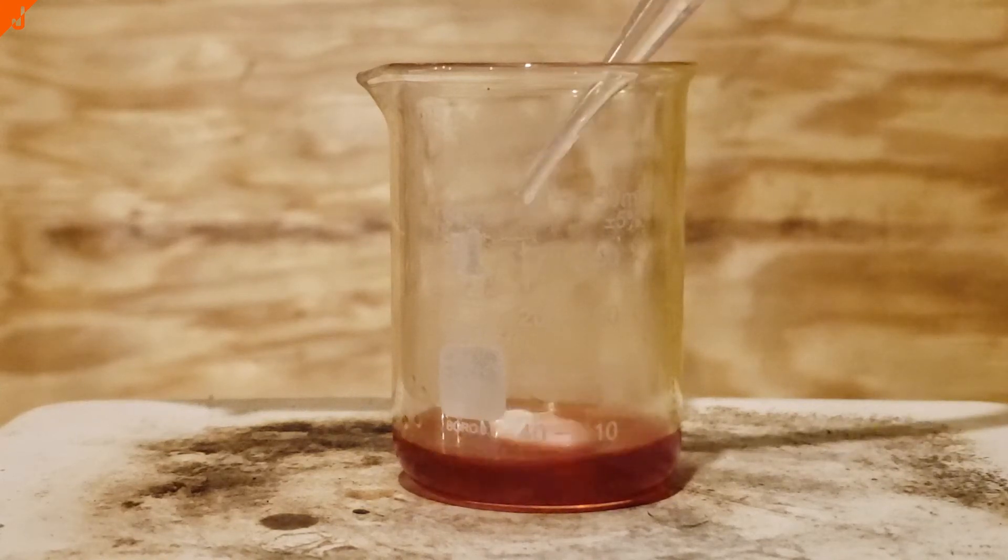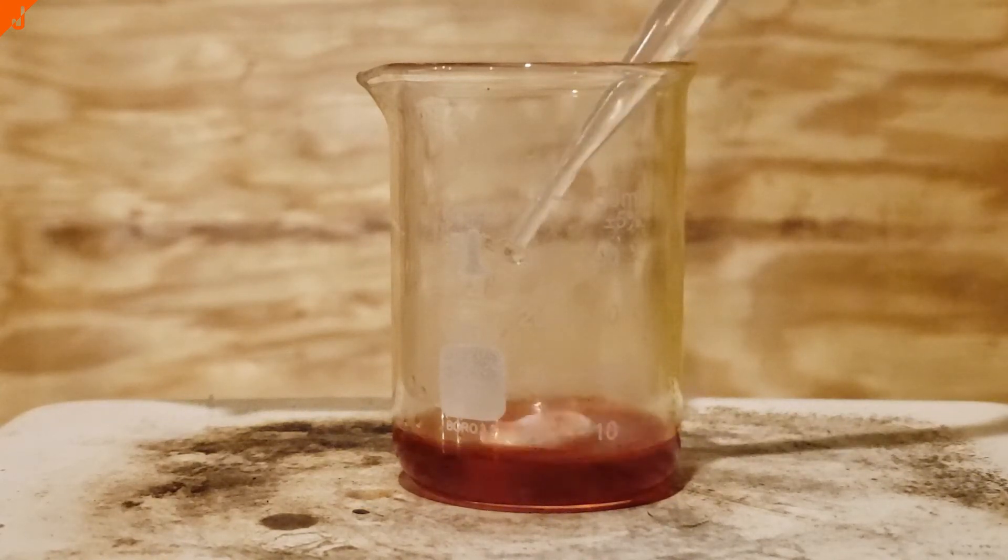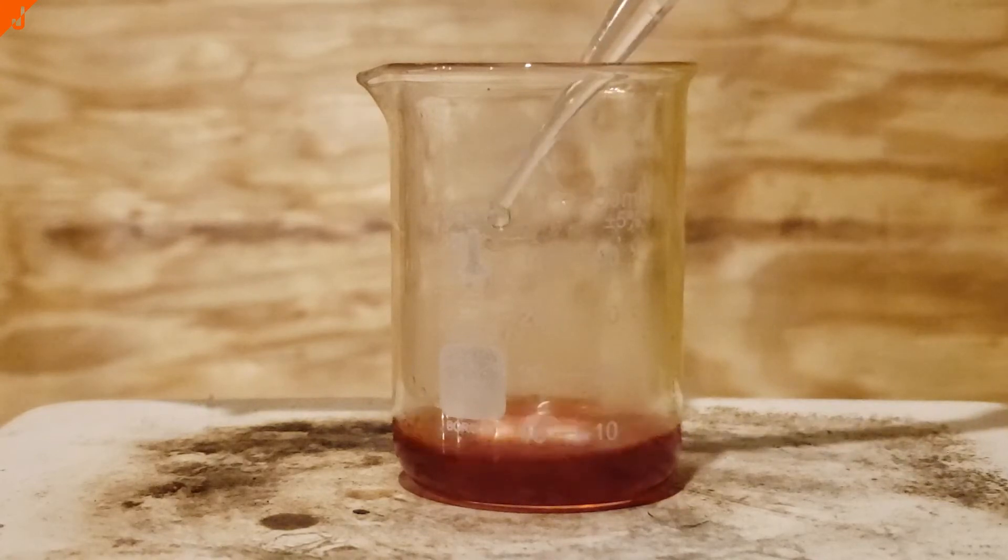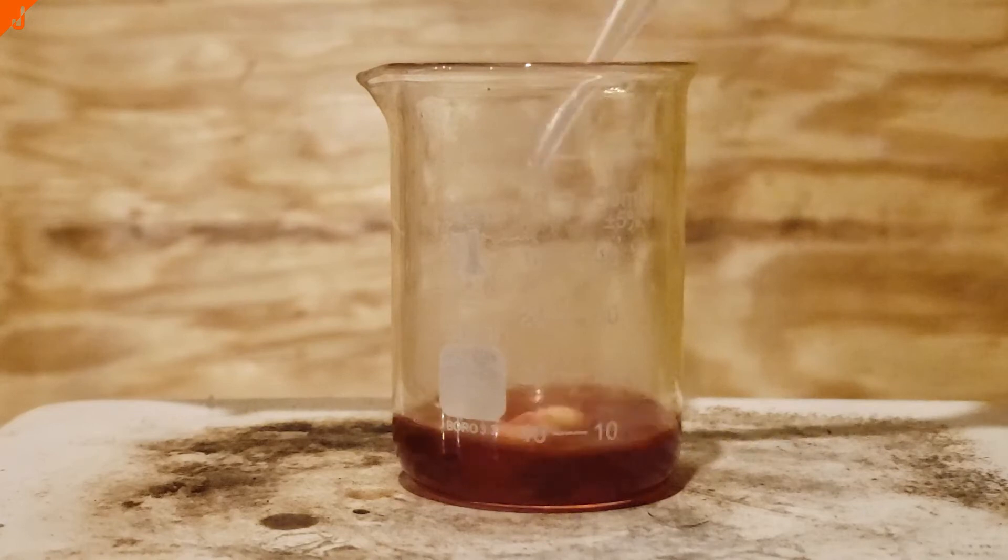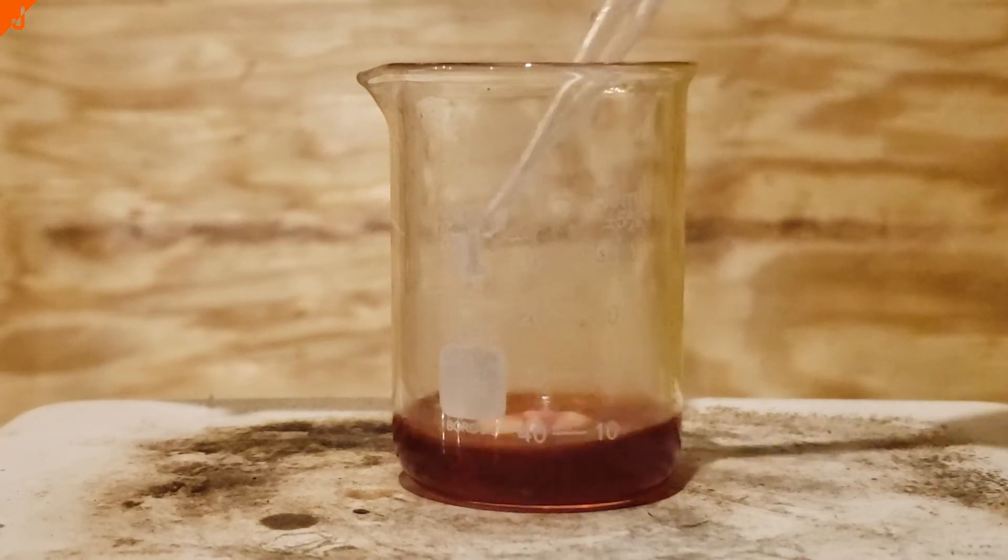Hello and welcome to today's video. Today I'll be making the very strongly colored organoboron compound rosocyanin. This compound is actually really easy to make and I'm surprised there's not more information about it out there.